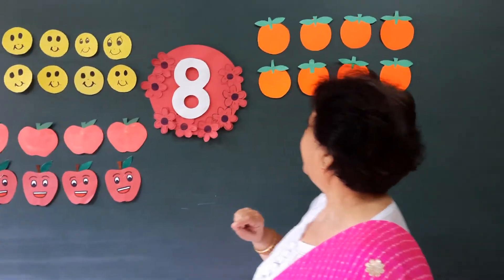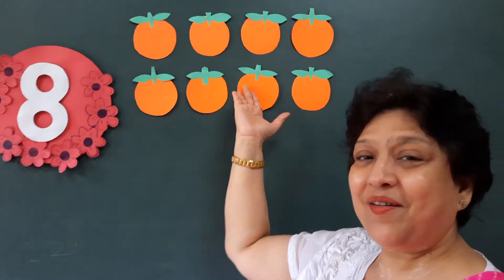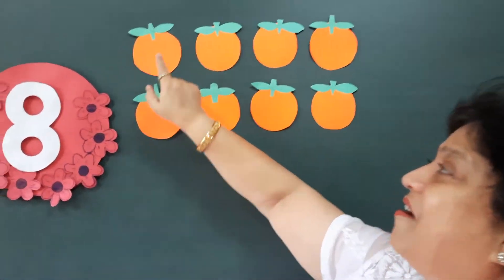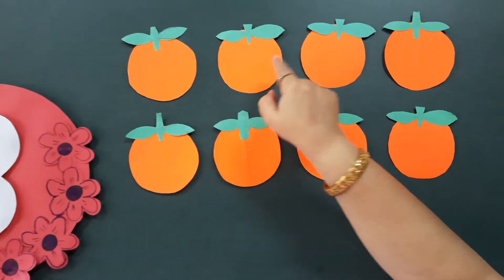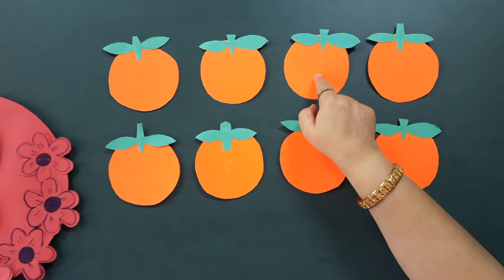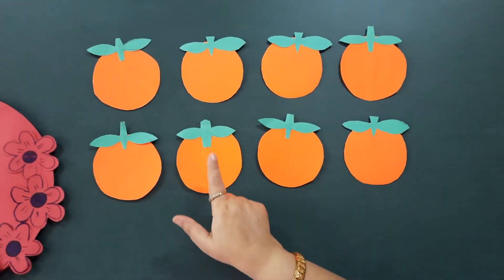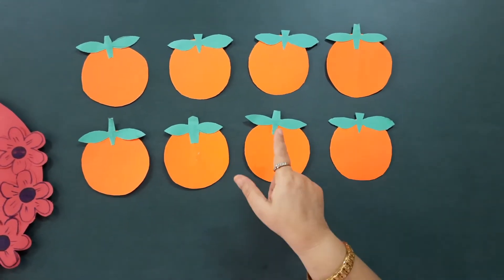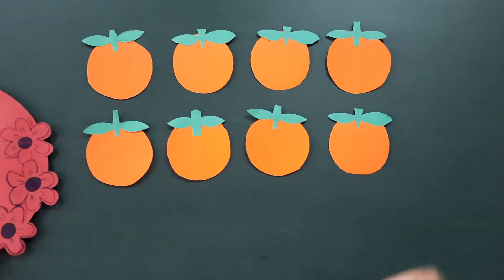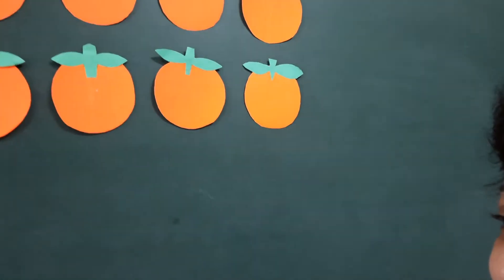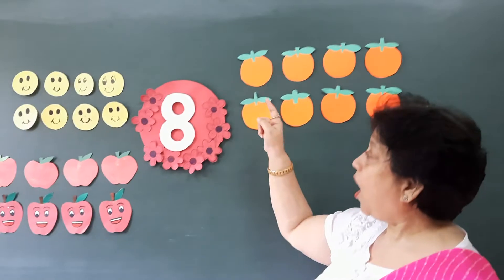Now these are oranges. One, two, three, four, five, six, seven, eight. Eight oranges.